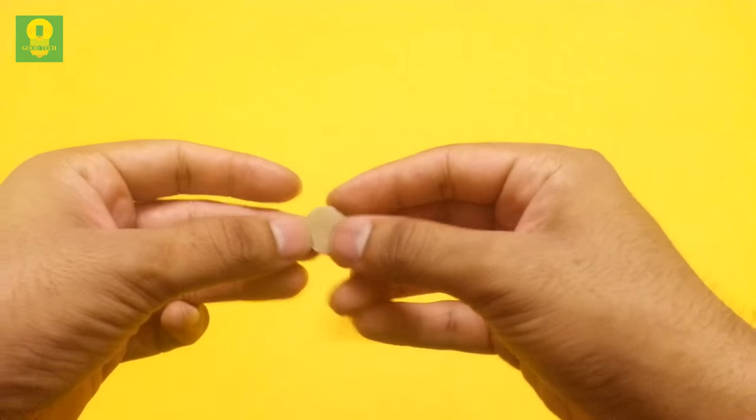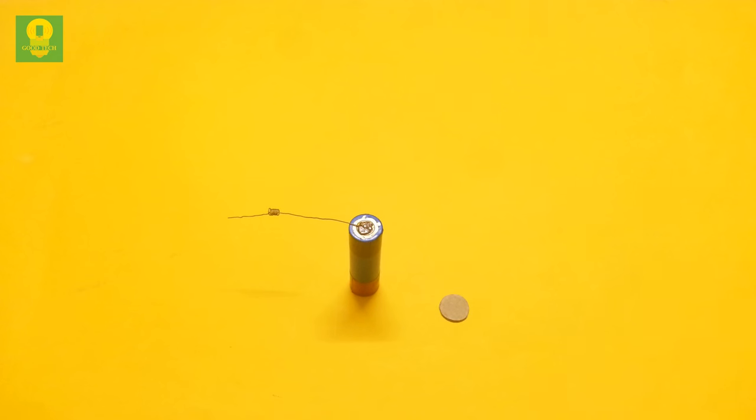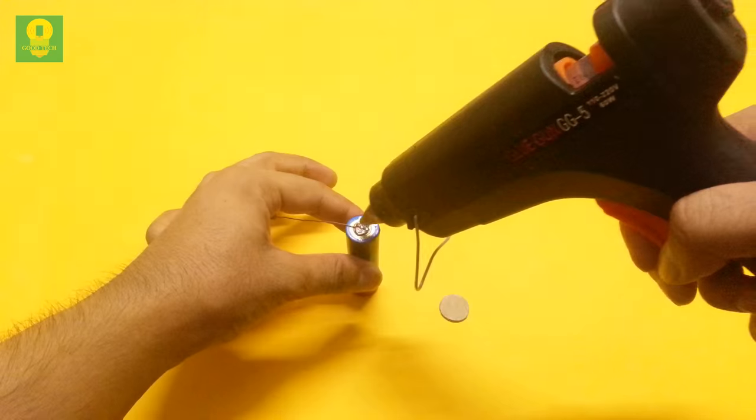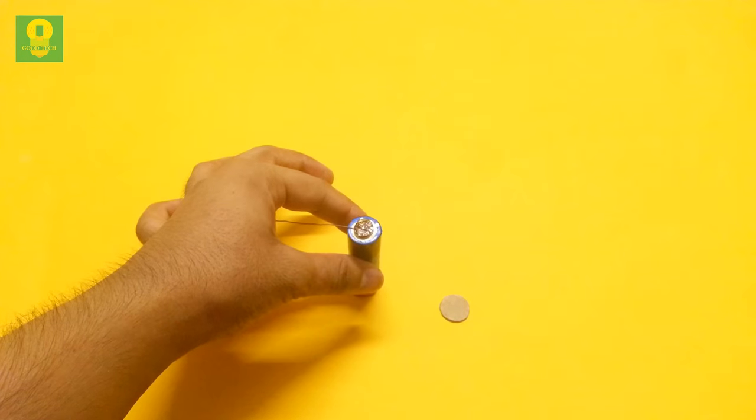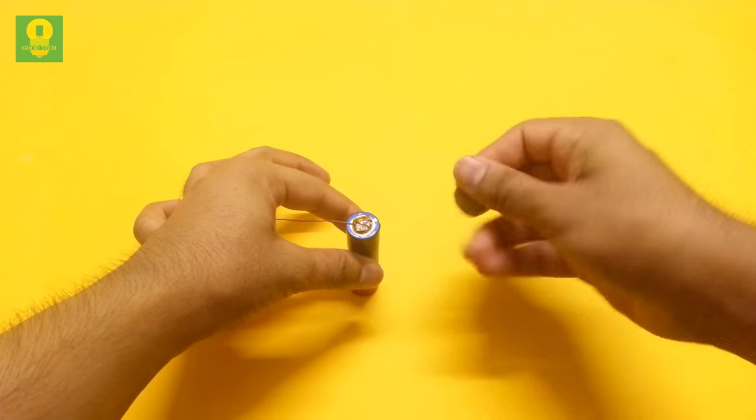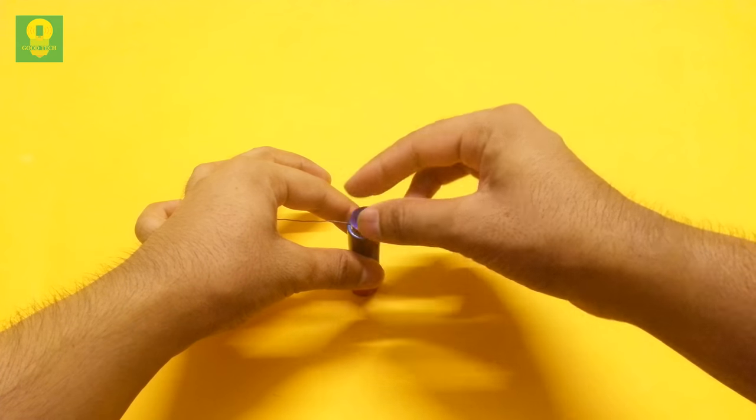Take a small piece of cardboard. Using hot glue, paste the cardboard on the cell terminal.